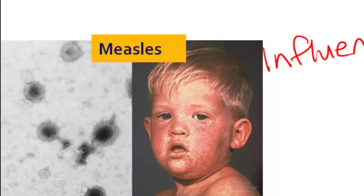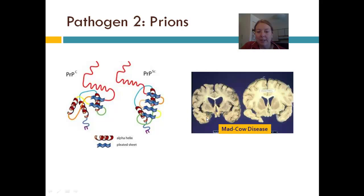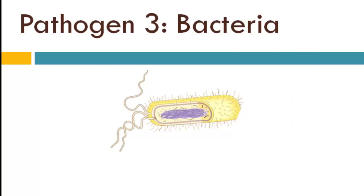The next pathogen are prions. Prions are fairly new to research scientists and they're really odd things — they're proteins that have gone bad, that were once good and then turned abnormal. They usually infect neurological tissue like your brain. An example is mad cow disease. So those are prions.